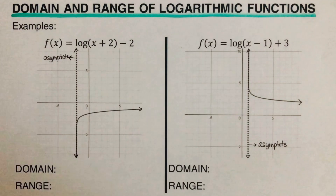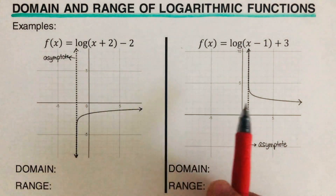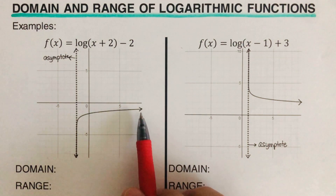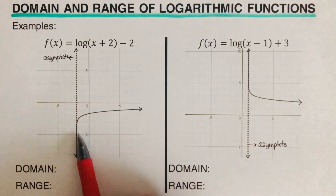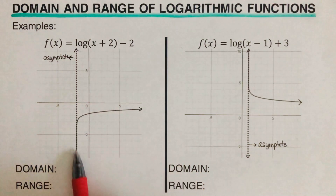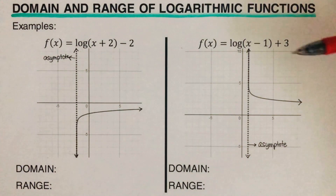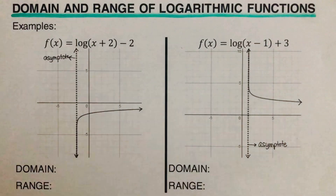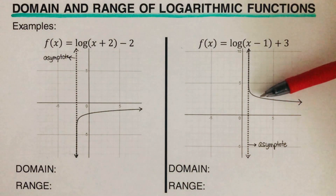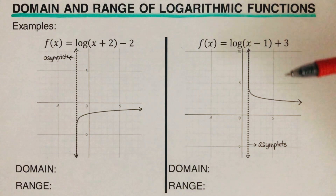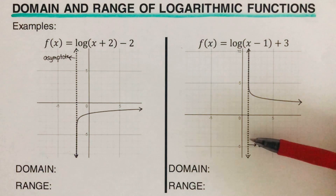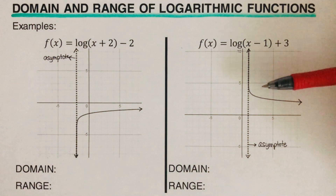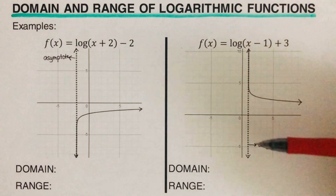Going back to the examples, before we write the domain and range for each graph, we remember that a logarithmic function is asymptotic, which means that this graph approaches towards the asymptote but will not touch it. So the asymptote value is not included. The asymptotes are shown in broken lines. This graph gets closer and closer to the asymptote but will never touch it — that's the definition of an asymptote. So the value for the asymptote is not included.